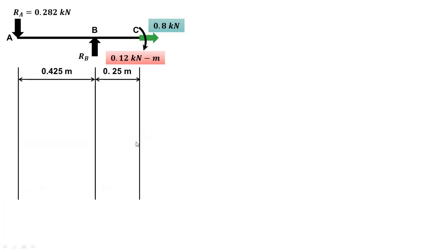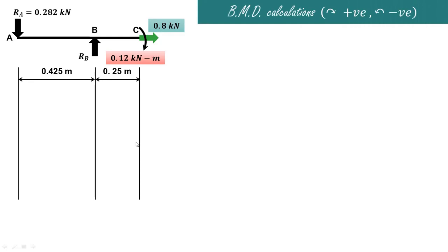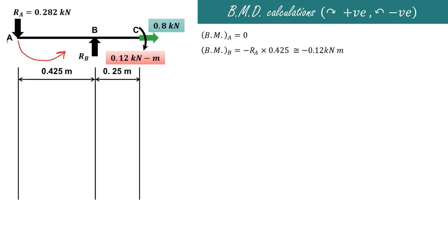Now we draw the bending moment diagram. The convention used is clockwise positive and anticlockwise negative. The bending moment at the ends of a simply supported beam is always zero. At point B, considering all forces on the left-hand side, RA acts downward and produces an anticlockwise moment, which is negative. So the bending moment at B is minus RA into 0.425, which equals minus 0.282 into 0.425, giving approximately minus 0.12 kN·m.